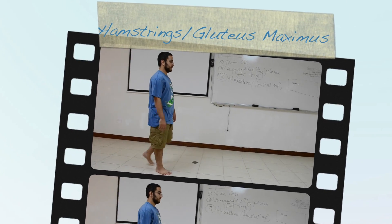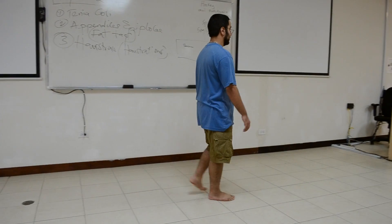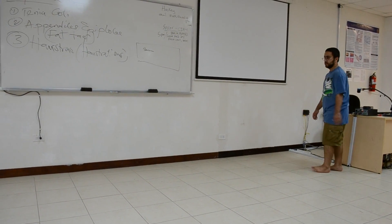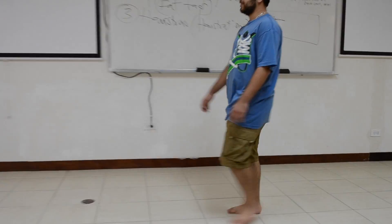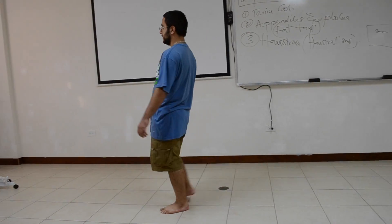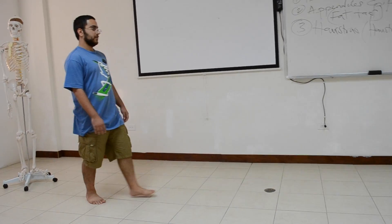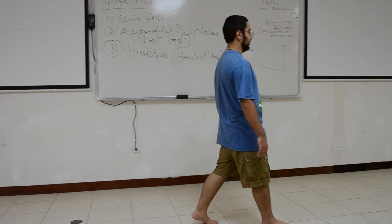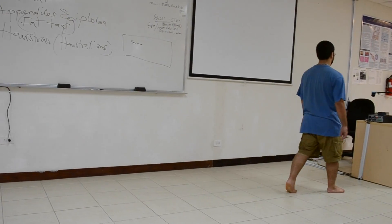Hamstrings extend the hip and flex the knee, while the gluteus maximus acts as an accessory hip extensor. During walking, the hamstrings prevent the trunk from bending forward following heel strike. To compensate for the loss of hip extension when these muscles are paralyzed, notice that there is a backward lean or extension of the trunk immediately after the heel strike.